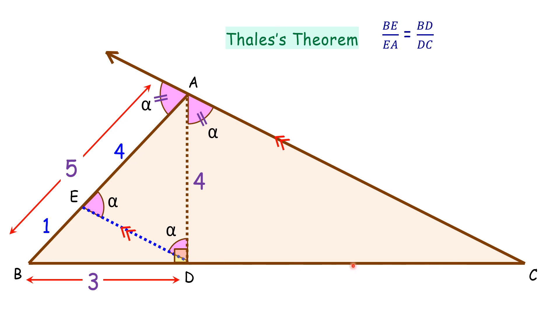So putting the values: BE is 1, EA is 4, BD is 3. Solving, we'll get DC as 12 centimeters. So this full length of the base is 15 centimeters.